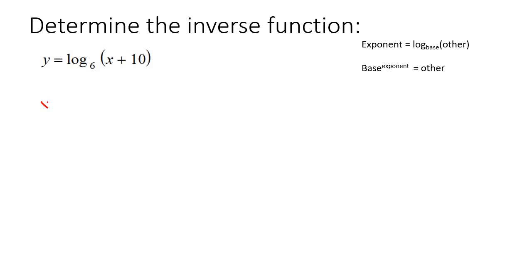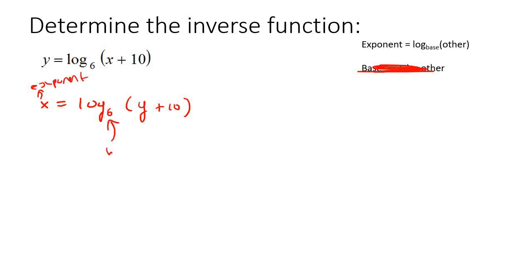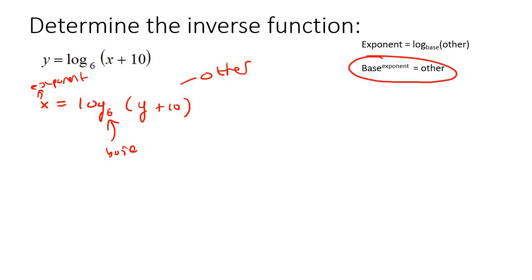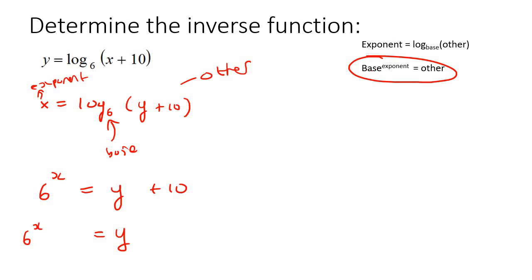Here's our last example. Step one: switch x and y around. Now we have a log equation. This is the exponent, this is the base, and this part is what we call other. We want to rewrite it as an exponential: the base goes first, then the exponent which is x, then the other. Now we need to get this y completely alone, so take that plus 10 to the other side. We end up with y equals 6 to the x, take away 10. And that would be your final answer.